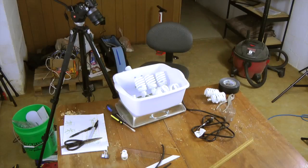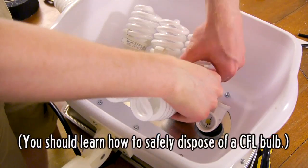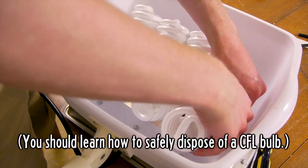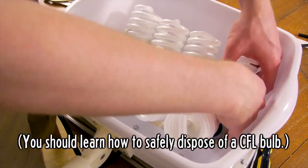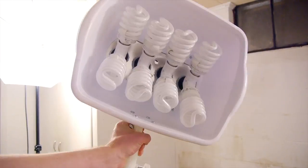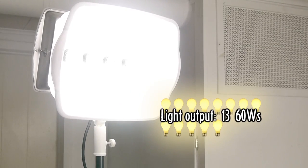CFLs contain a small amount of mercury vapor, so if one breaks, you should air out the room for a few minutes, then seal the bulb in a container, and find out how CFL disposal is handled in your community. These eight 23-watt CFL bulbs output the equivalent of 1360-watt incandescence, but only use one-quarter of the power.